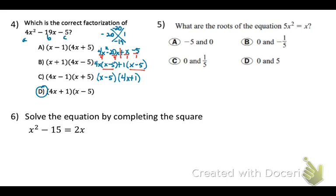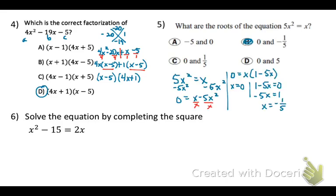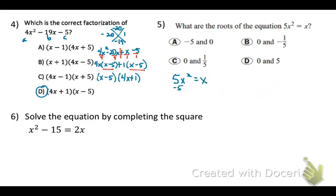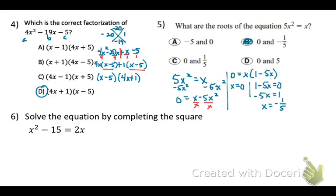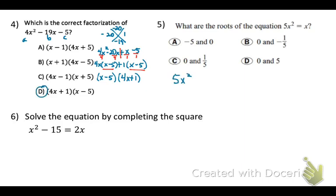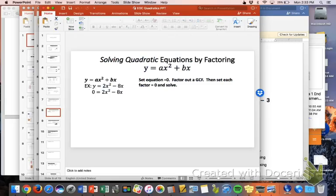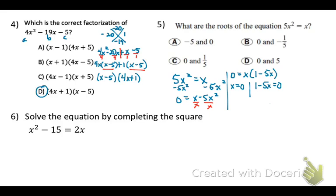Number 5, what are the roots? So roots is the same thing as solutions. So we're going to set that equal to 0 and solve. I'm going to subtract my 5x over. Then on the right side, I can factor out a common factor. So I'm going to factor out my x. Set those each equal to 0 and then solve. So x will equal 0 and x will equal negative 1 fifth. So I've got choice b.